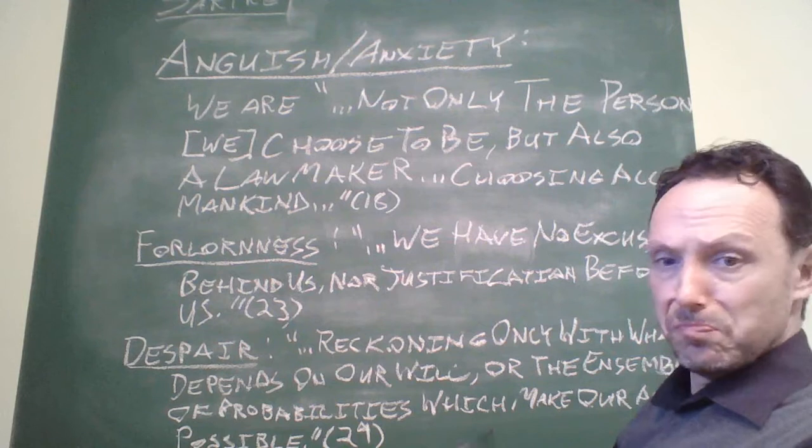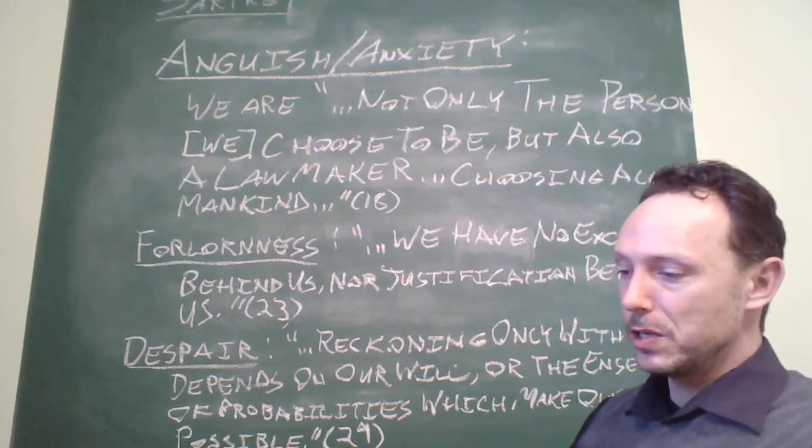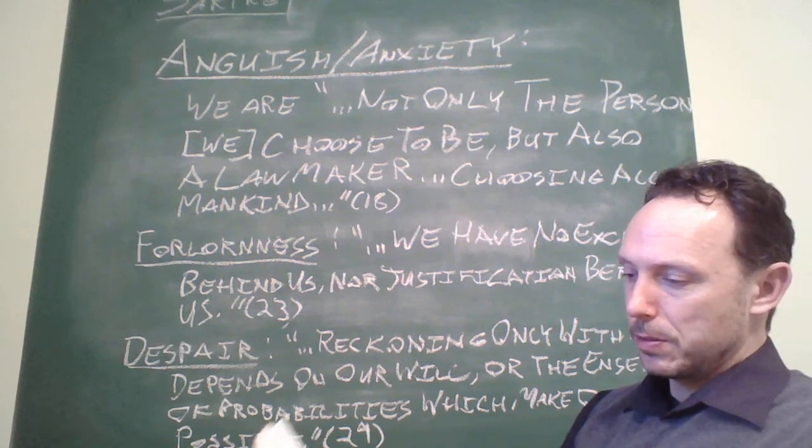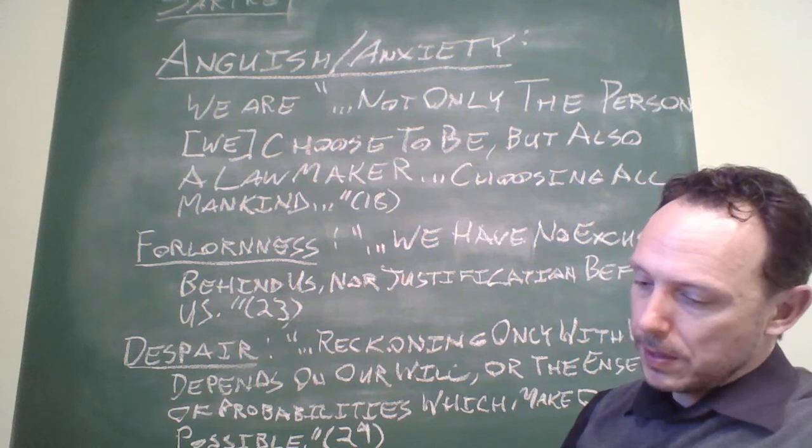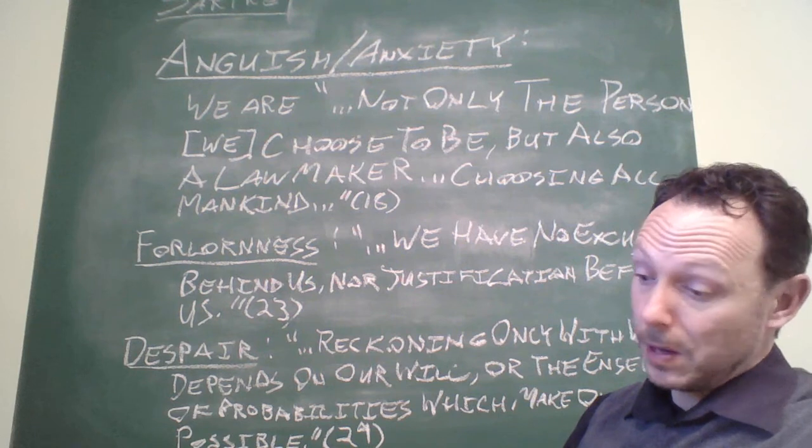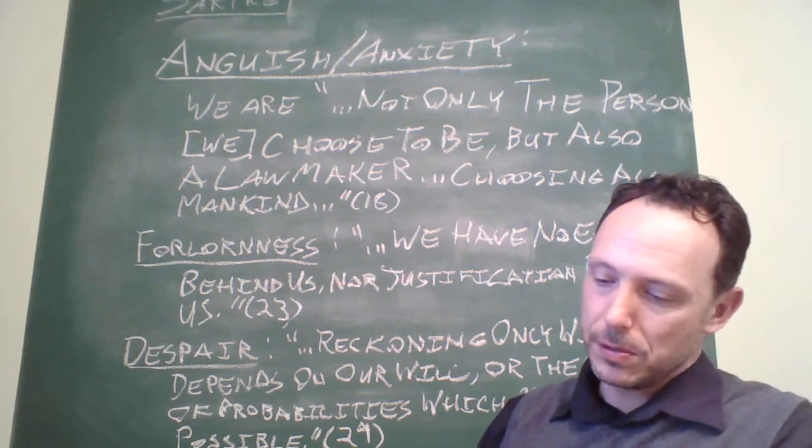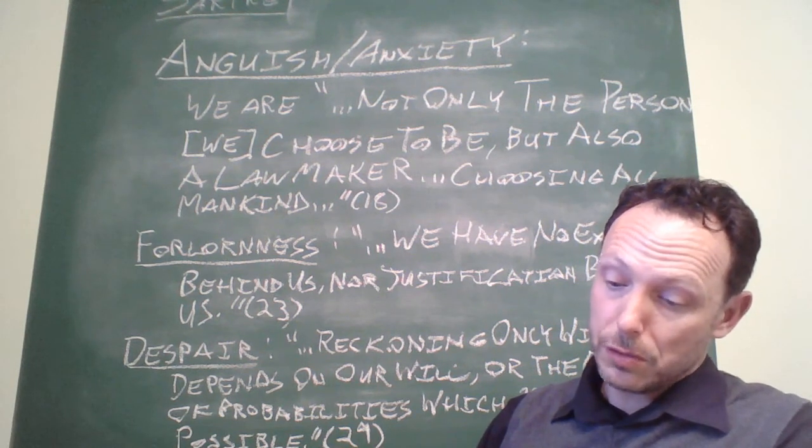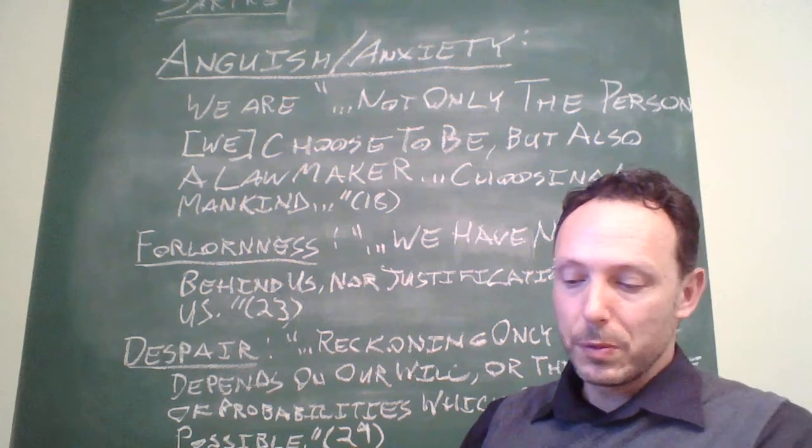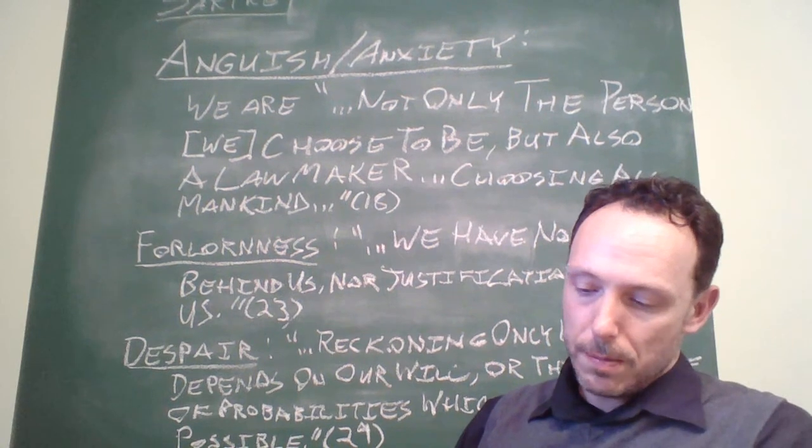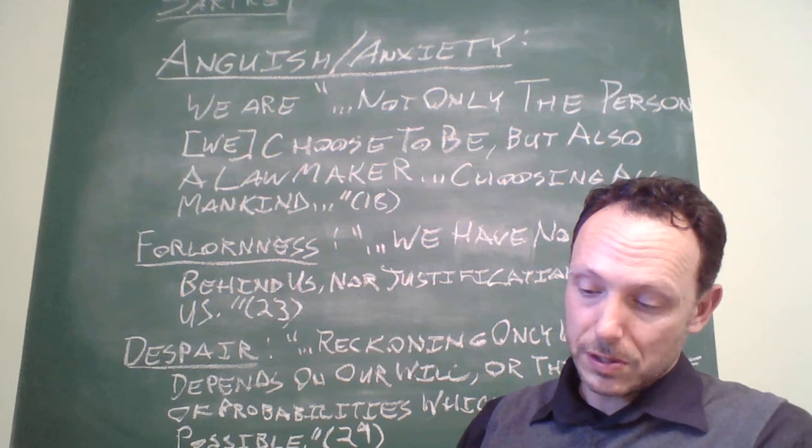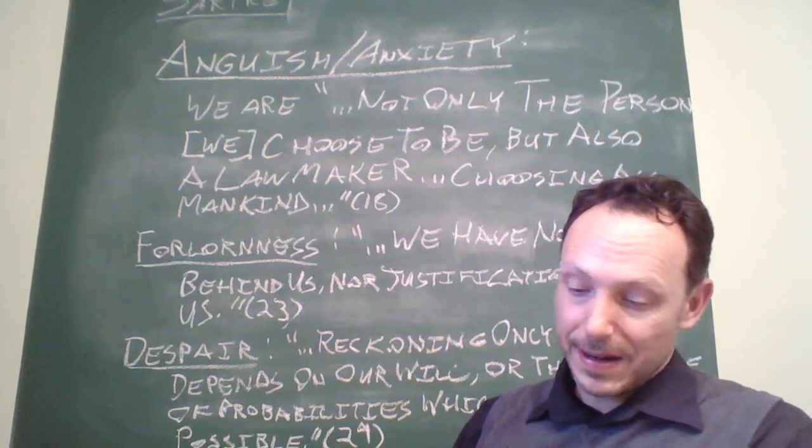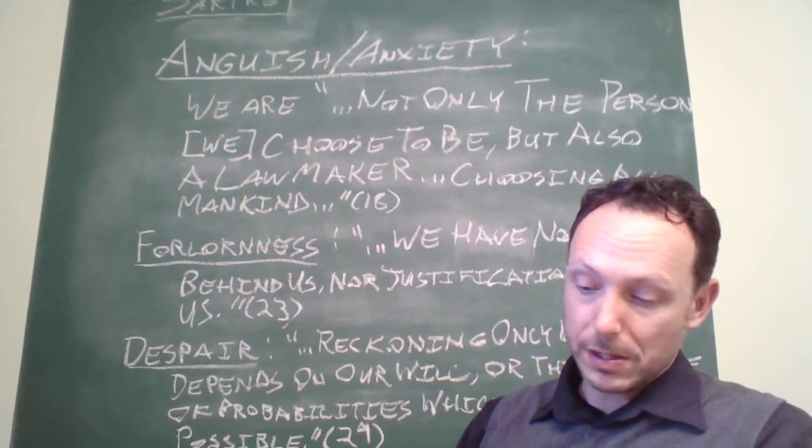Sartre claims that despair has a simple meaning, which is nice. It means that we shall, page 29, confine ourselves to reckoning only with what depends on our will or on the ensemble of probabilities that make our action possible. When we want something, we always have to reckon with possibilities. I may be counting on the arrival of a friend. The friend is coming by rail or streetcar. This supposes that the train will arrive on schedule or that the streetcar will not jump track. I'm left in the realm of possibility. But possibilities are to be reckoned with only to the point where my action comports with the ensemble of these possibilities and no further. The moment the possibilities I'm considering are not rigorously involved in my action, I have disengaged myself from them because no God, no scheme can adapt the world to its possibilities and its possibilities to my will.